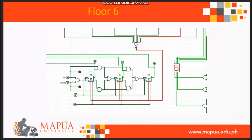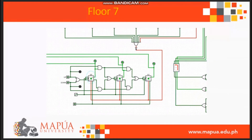The output must be 110 to display the number 6, which indicates the sixth floor. And lastly, the output must be binary 111 in order to display the number 7, and that indicates the seventh floor or the top floor.